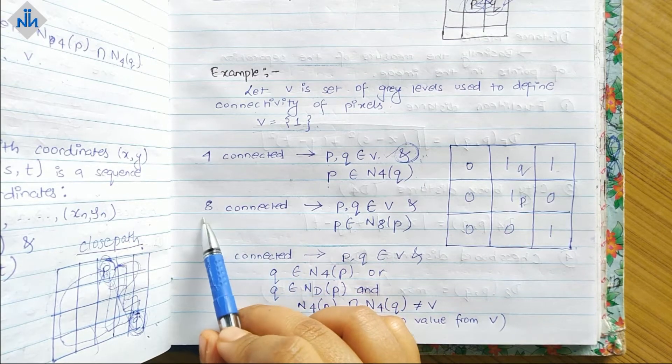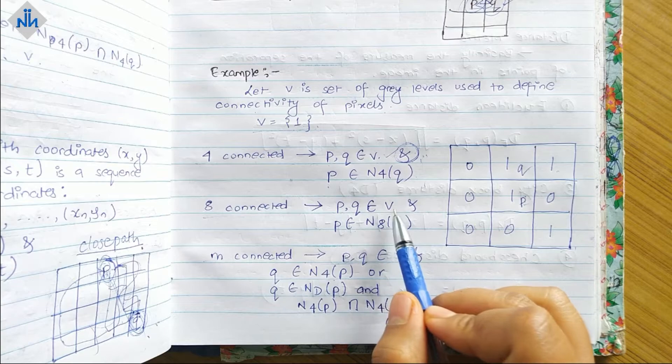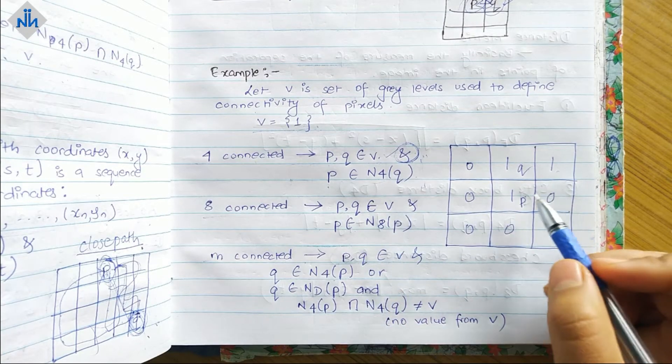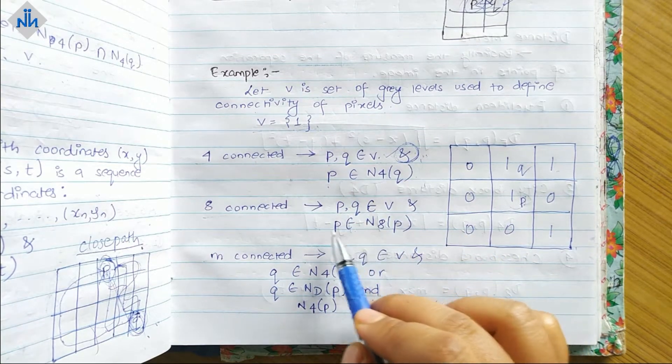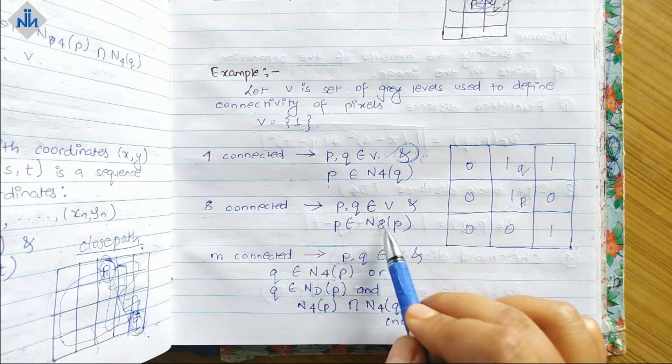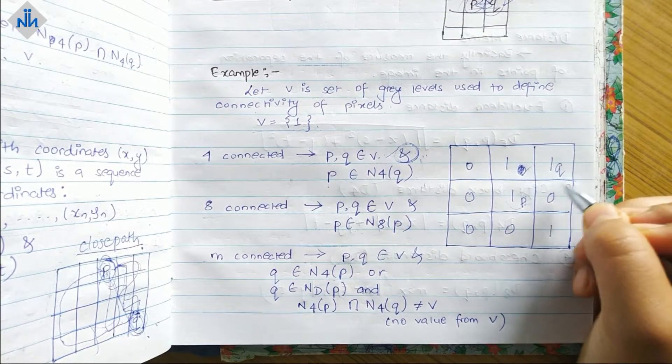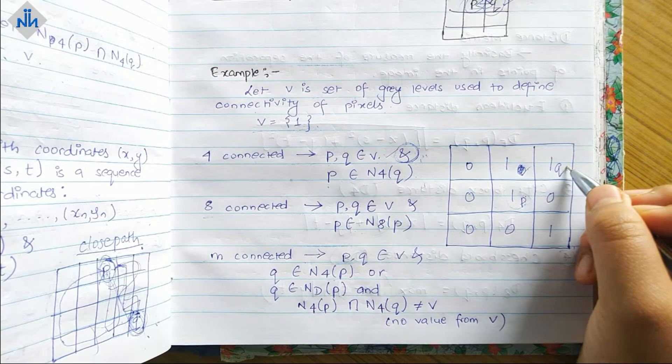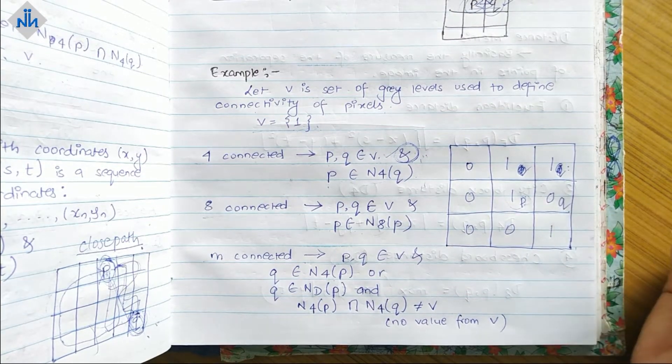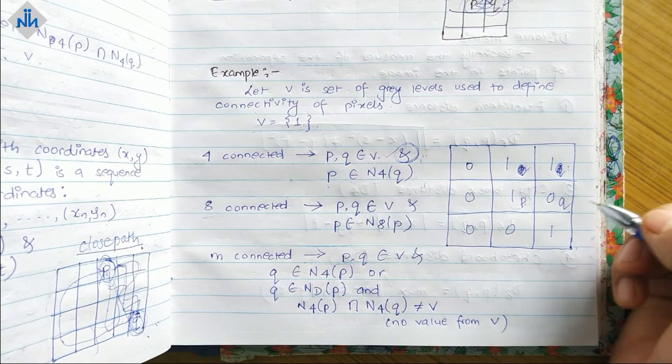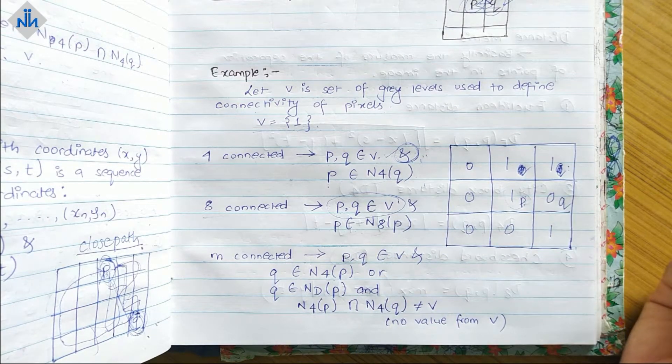Now let's check what is eight connected. P and Q belong to V first of all, so yes they are belonging to V. And this must be also a N8 neighbor, so yes they are N8 neighbor. If we keep Q over here it will still satisfy as it is an N8 neighbor. If we keep Q over here will it satisfy? No, because the first one will only be violated. We don't even need to check the second one because the intensity levels are not same.